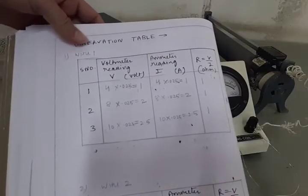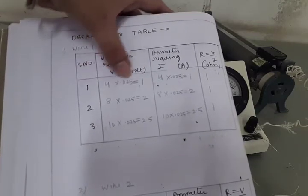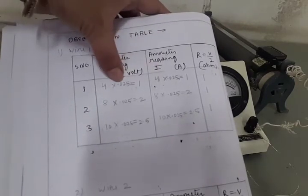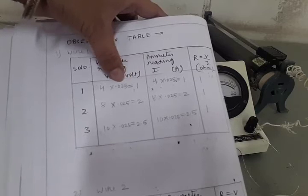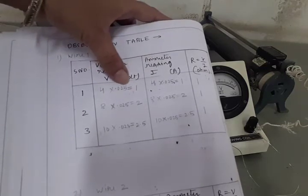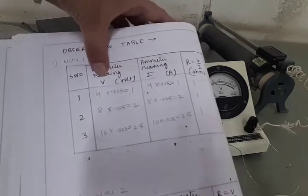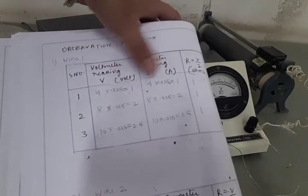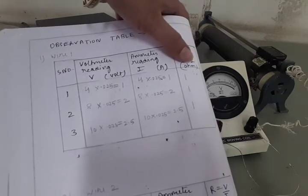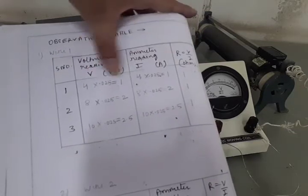So you see now ammeter is showing four division, voltmeter is also showing four division. We have to multiply the division with the least count. So 0.025, 0.025. So 4 into 0.025. So voltmeter reading and ammeter reading are coming 1.1. So resistance in the last column is calculated by V by I formula means Ohm's law. It will also give answer 1. So this is first reading noted.